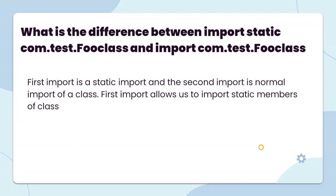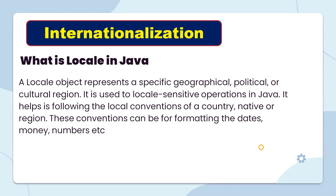The first import is used to import static members of the class. Locale objects represent a specific geographical, political, or cultural region. It is used for locale-sensitive operations in Java, allowing formatting conventions of a country or region, such as formatting dates, money, numbers, etc.